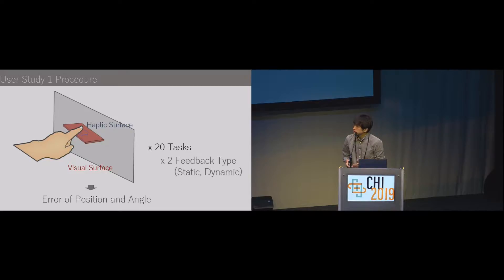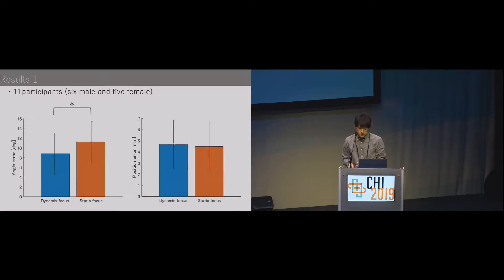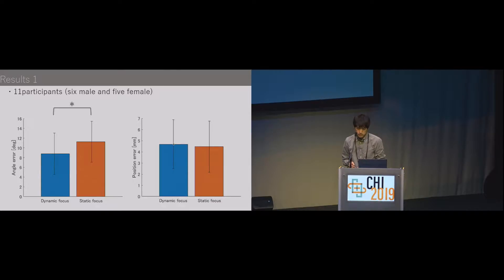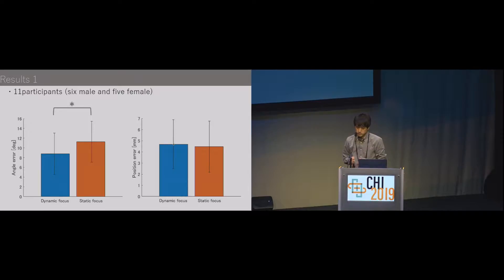After operation, the difference in position and angle between the two surfaces is used to evaluate how accurately the surface was recognized. This task was performed 20 times for each of the two feedback conditions, and the position and angle of the visual surface were randomly changed for each task. This graph shows the mean error of 11 participants. In the angle estimation, there is a significant difference between the two methods. The angle error of the dynamic focus method is about 9 degrees, indicating that the change of pressure distribution gives more information about the angle of the surface. In the position estimation, no significant difference was obtained, but both estimation errors were about 4.5 millimeters, so position can be estimated with both feedback methods.